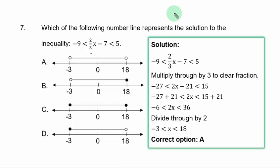Question 7. Which of the following number line represents the solution to the inequality? Minus 9 less than 2 over 3x minus 7 less than 5. You have the various options. Solution. You take the given inequality first. Clear the fraction by using 3 to multiply through. So, you have minus 27. That is minus 9 times 3. Less than 2x minus 21 less than 15. We can solve it directly without breaking it down.